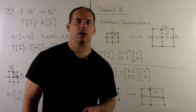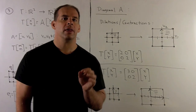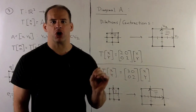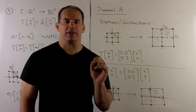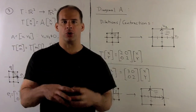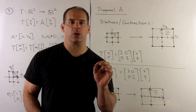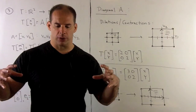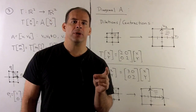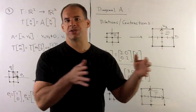For concrete examples, let's first suppose A is a diagonal matrix. If the diagonal entries are equal and positive, we call T a dilation or contraction. It's a dilation if the diagonal entries are greater than 1 — we stretch equally in all directions away from the origin. If the entry is between 0 and 1, we have a contraction, moving into the origin equally from all directions. If the diagonal entry equals 1, we have the identity matrix, sending all points back to themselves.